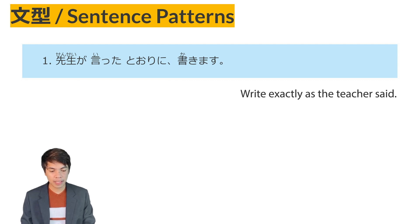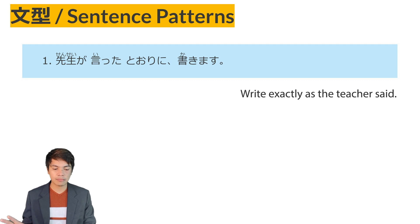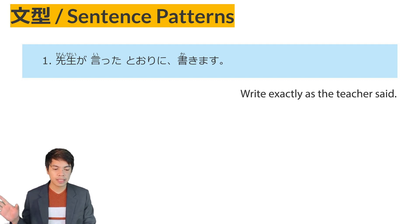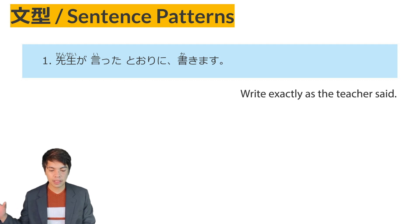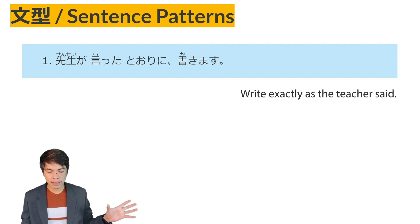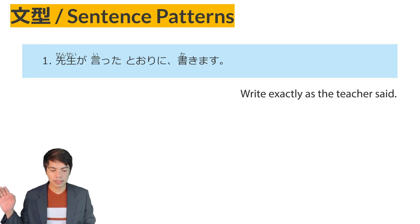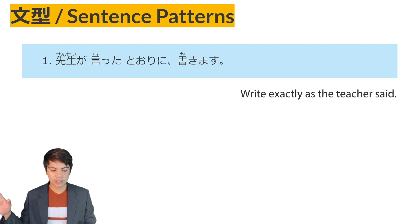For example, sensei ga itta tori ni — sensei ga itta comes from the verb iimashita. Sensei said. So, just like the teacher said, kakimasu — I write exactly the same way as the teacher said.